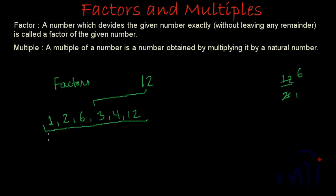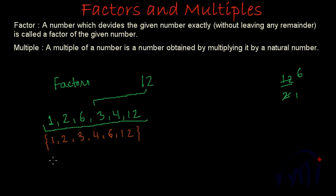We should always prefer to write factors in increasing order. So first we write 1, then 2, then 3, then 4, then 6, and after that 12. So this will be the set of factors of 12. All these numbers divide 12 completely — when we divide 12 by any of these numbers, we get 0 as the remainder. All these numbers exactly divide 12.